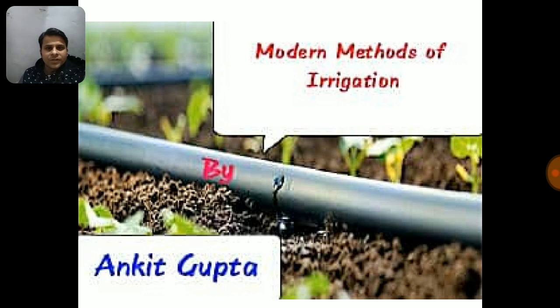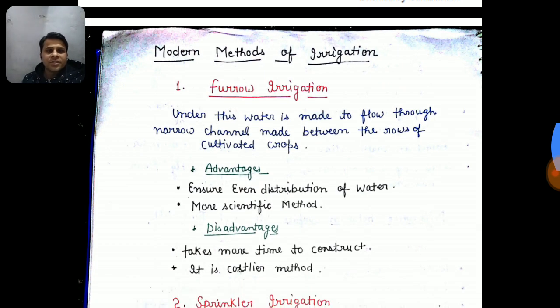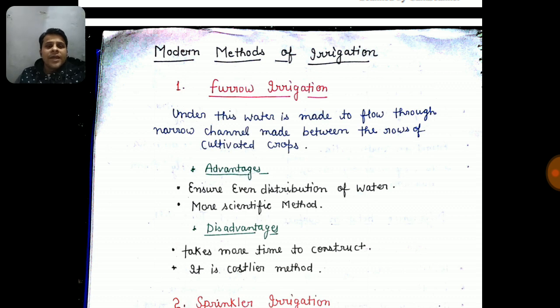Let's start with the first topic: furrow irrigation. As you can see in this picture, it is representing furrow irrigation. Furrow irrigation means a row in agricultural land. In this method, a narrow channel located between two rows provides water to the cultivated crops. This is one of the methods of irrigation.